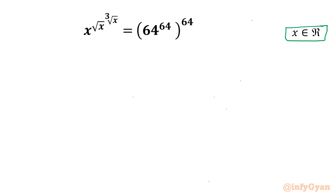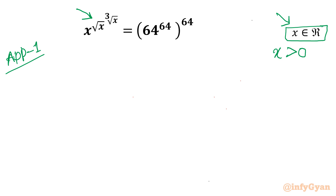I will demonstrate three approaches to attempt this problem. Let me write method or approach number 1. I will begin with the observation that since we have square root x, x must be positive for real solutions. Also, x cannot be equal to 0, because 0 power 0 power 0 will generate an indeterminate state.